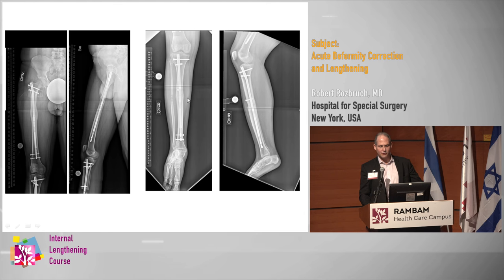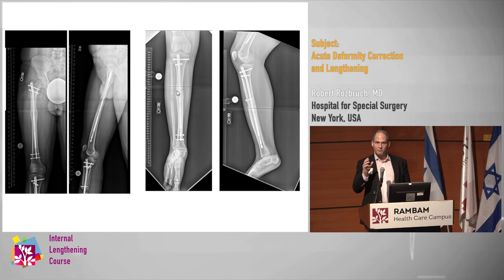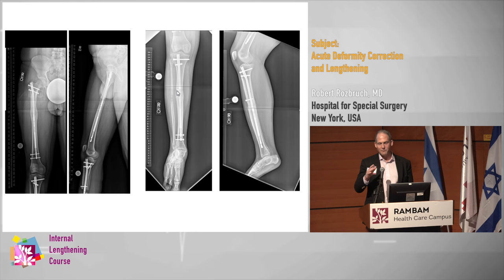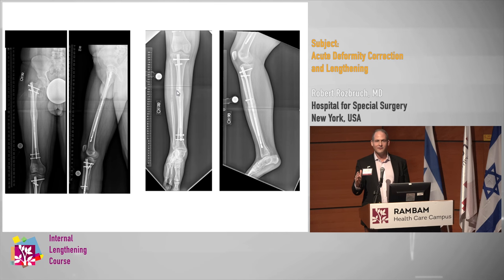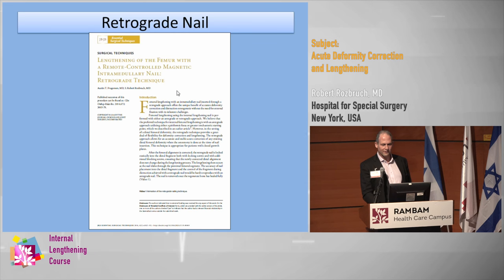Pay attention to that blocking screw. In the tibia there's a tendency to go into valgus too. Even if you leave the operating room roughly straight — say you have 10 degrees of valgus and you do a diaphyseal osteotomy correcting most of it — if you undercorrect two or three degrees, when you do your lengthening you're going to go back into valgus. So I would encourage you to use the blocking screw in those kinds of situations.